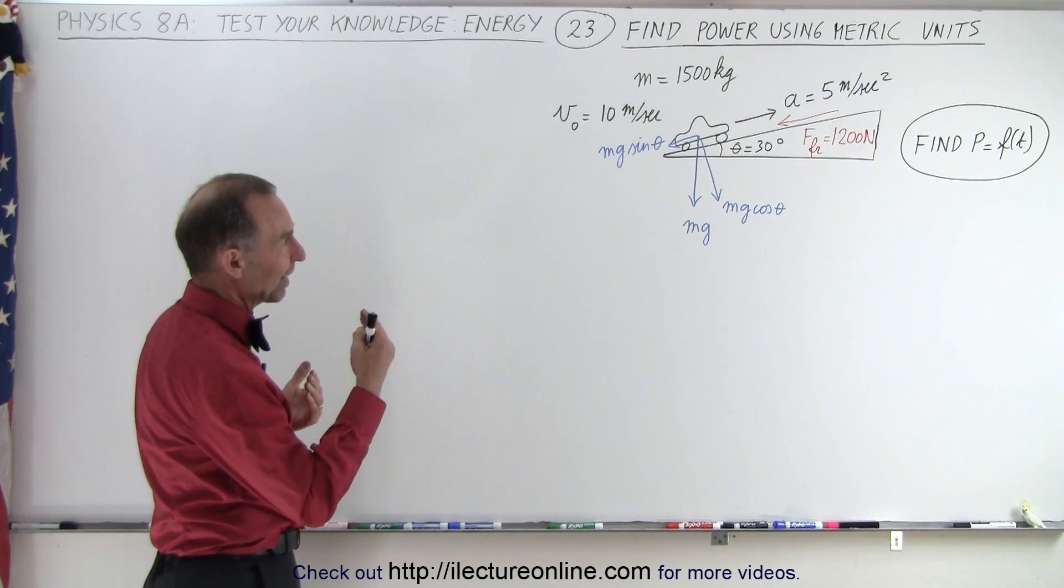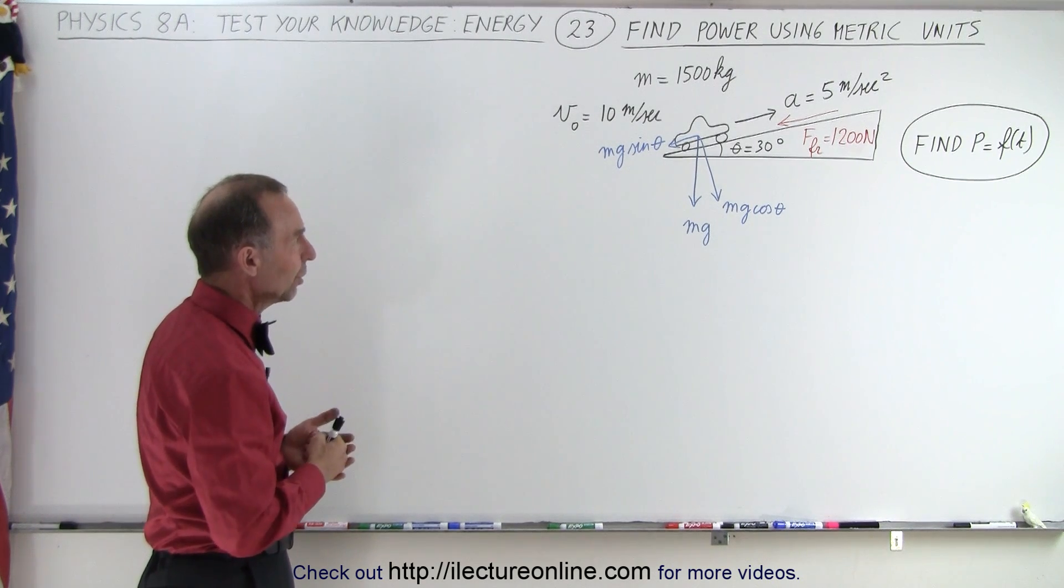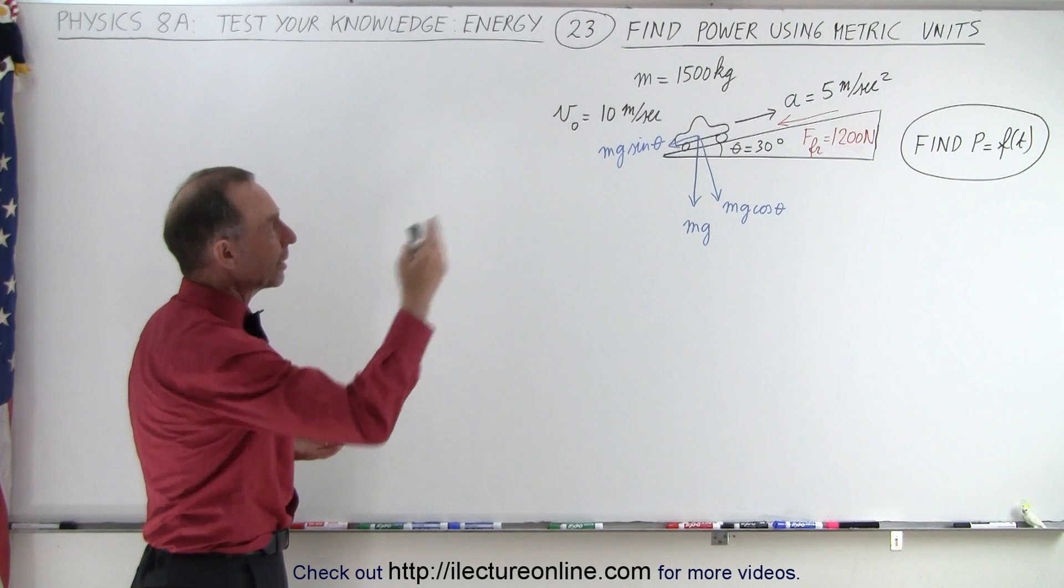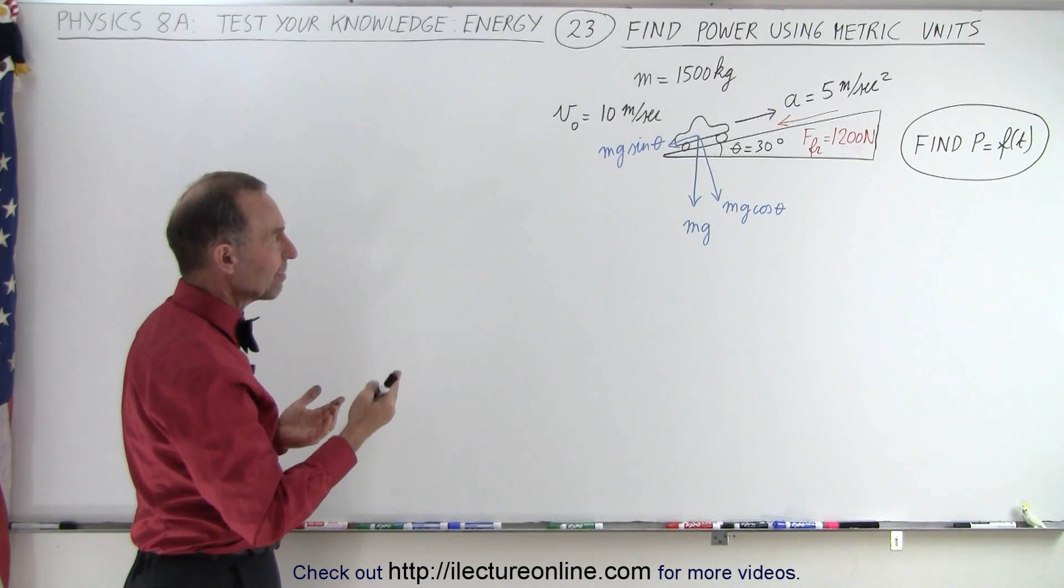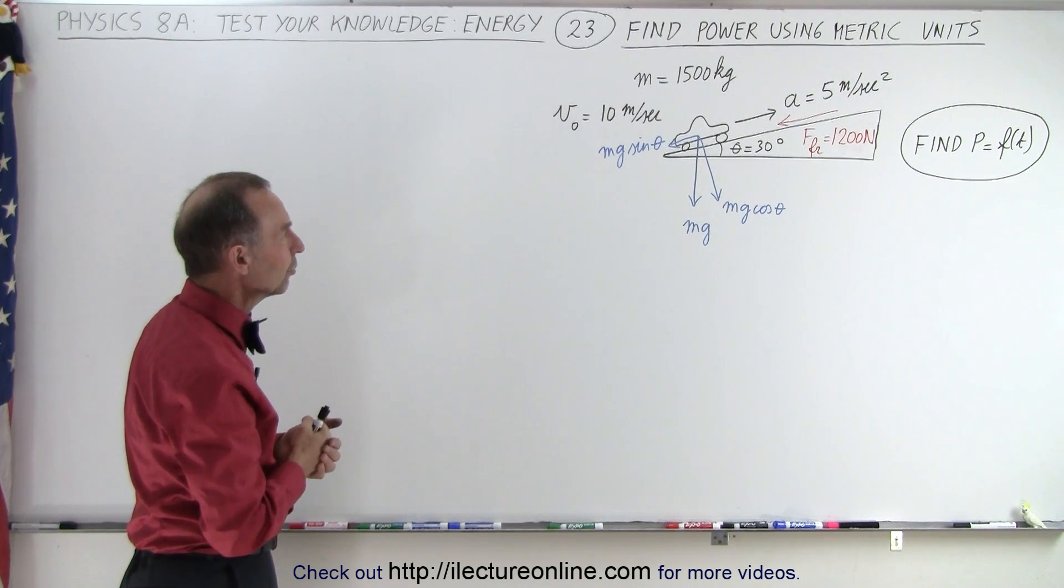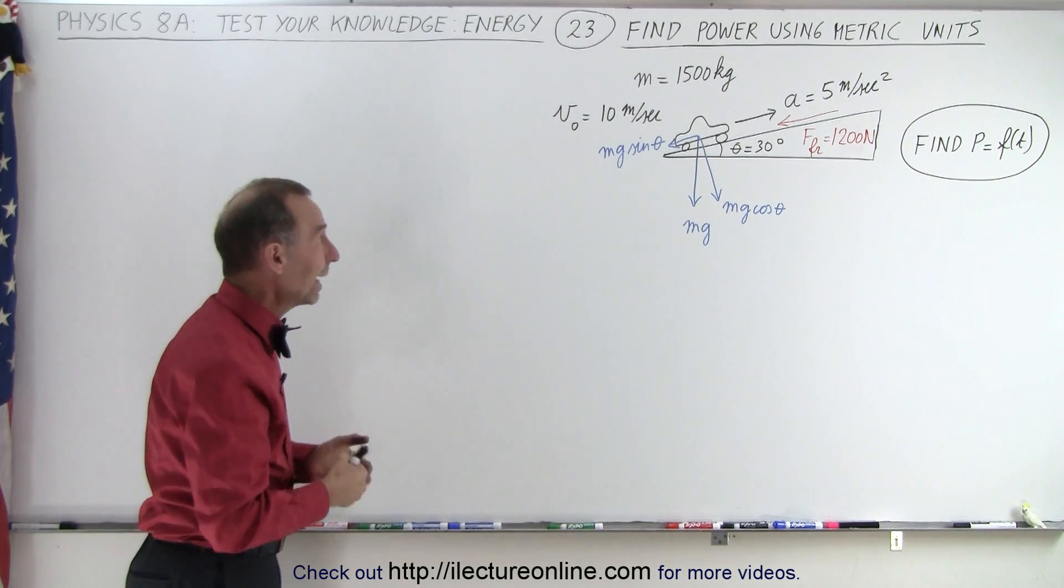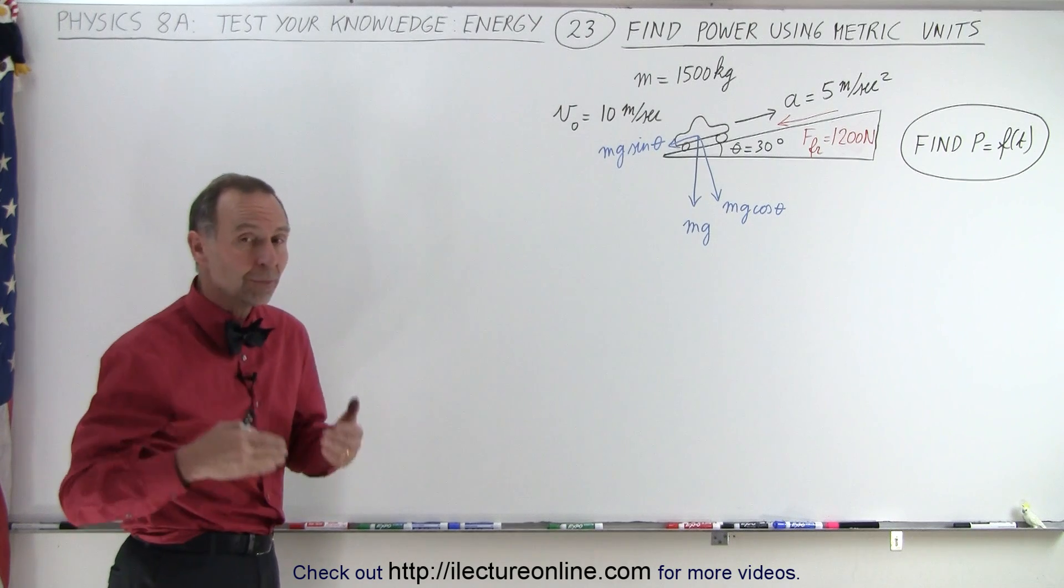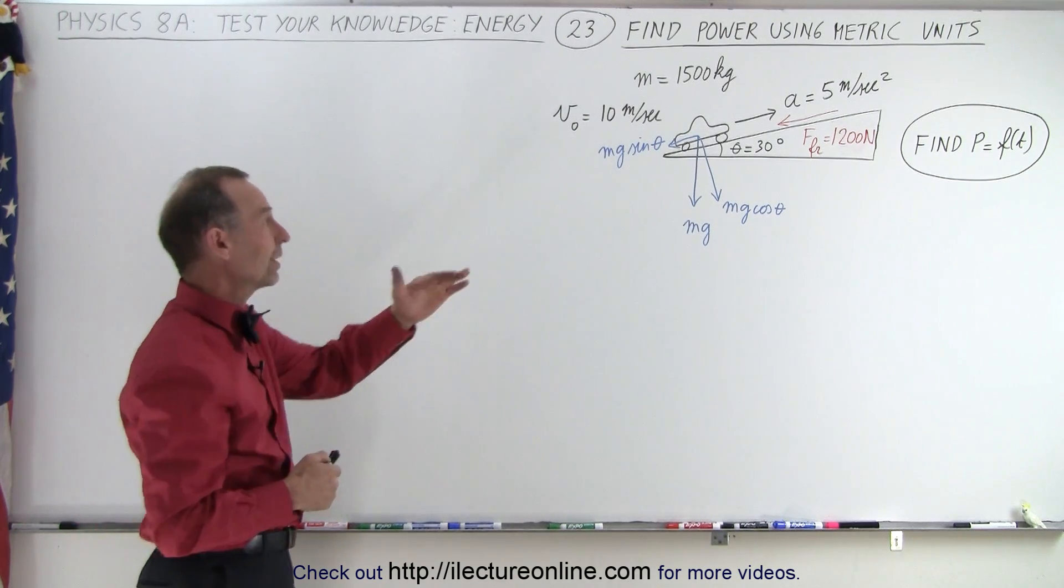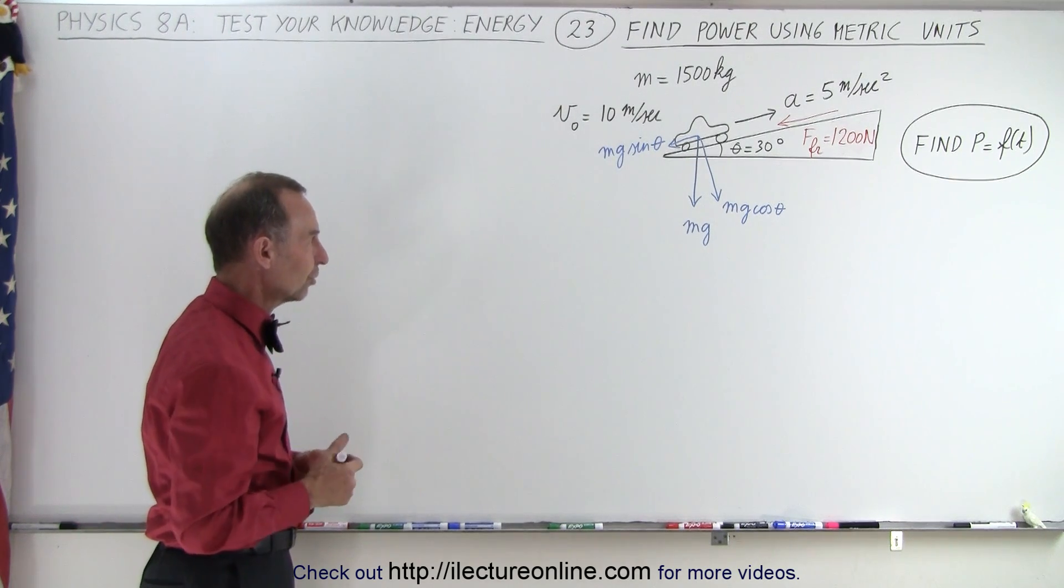So here again we're trying to find the power as a function of time. We're given that the car is accelerating up the hill. We're given that the friction force is 1200 newtons, the angle is 30 degrees, the initial velocity is 10 meters per second, and the mass of the car is 1500 kilograms. How much power is required to accelerate the car up the hill under those conditions?